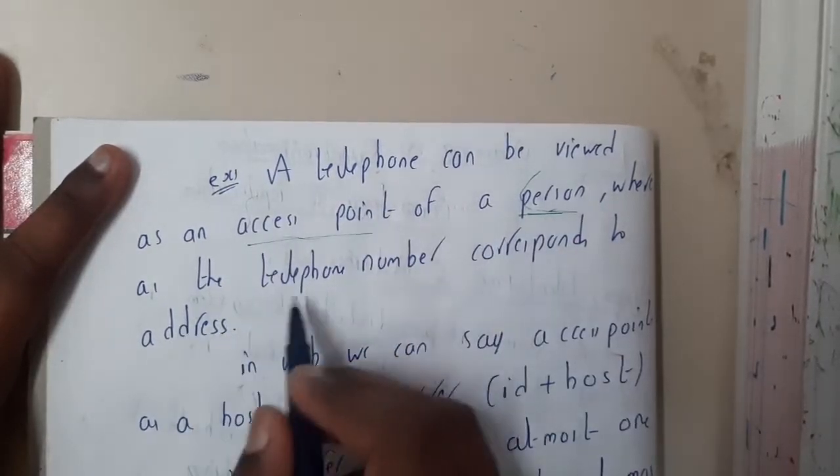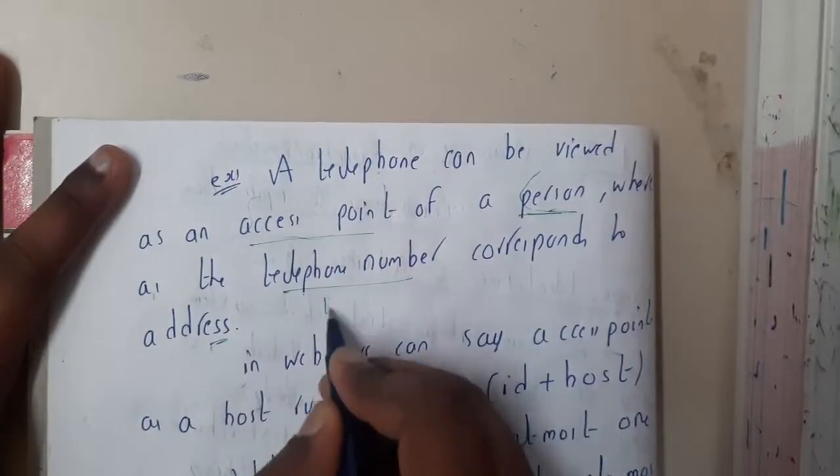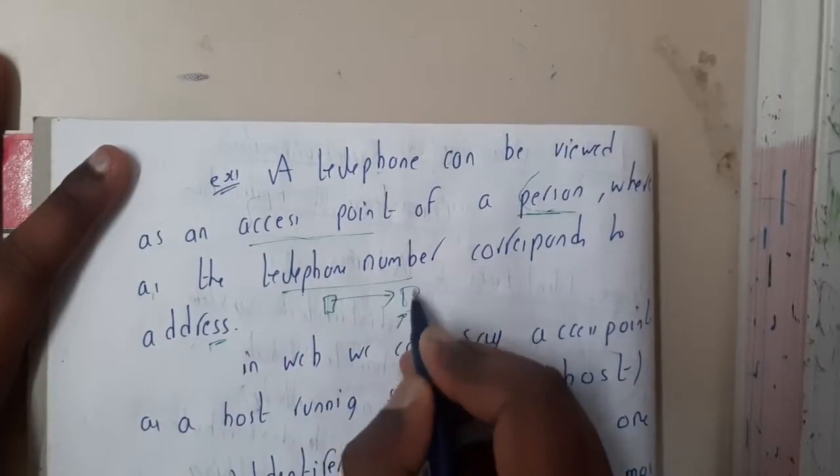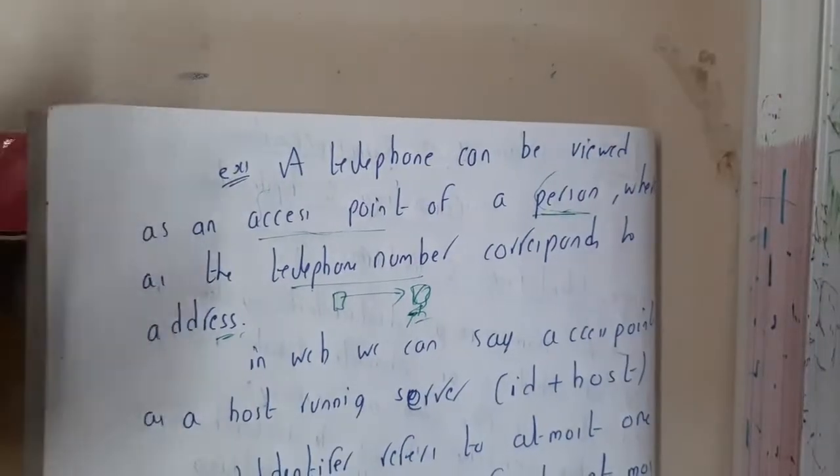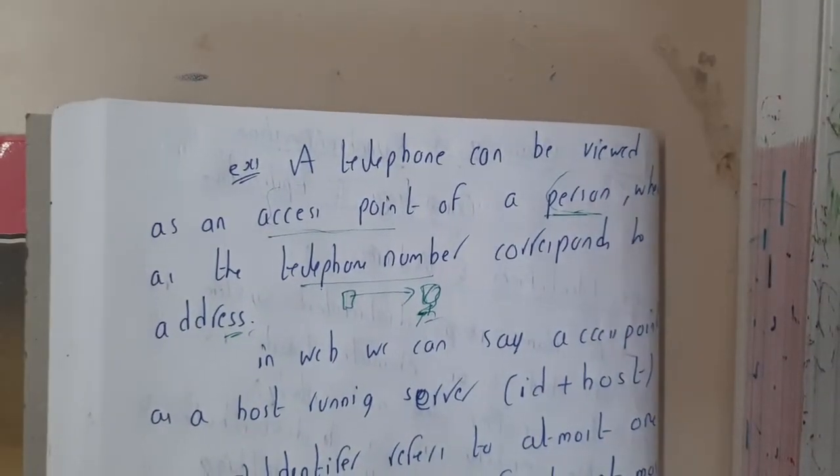So the telephone number corresponds to an address. So the telephone number will be with respect to a particular person. So that is the reason why it is called an address. Okay.